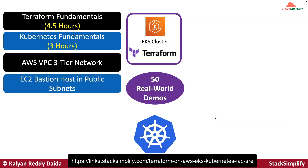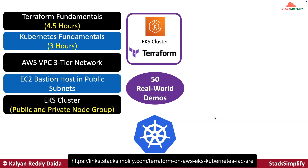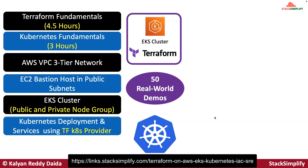After that, we will create an AWS EC2 bastion host in public subnets using Terraform. And once this is completed, we will go ahead and create an EKS cluster with public and private node groups. Once these three sections of Terraform code are completed, we will focus on implementing a simple Kubernetes deployment and service using the Terraform Kubernetes provider.